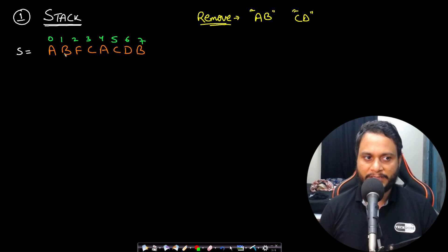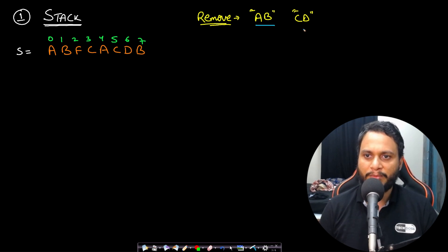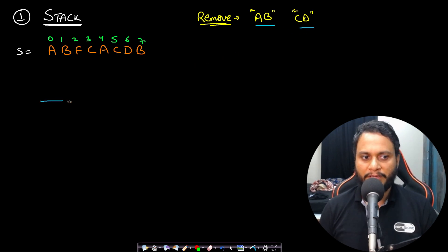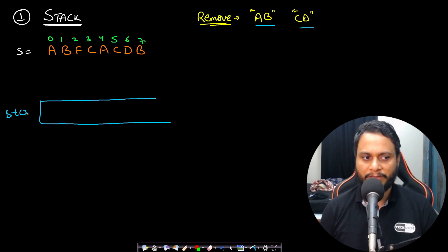Let's see a dry run with the string A, B, F, C, A, C, D, B and understand how we can recursively remove AB and CD using a stack. If we take a stack — let's name it ST — initially it will be empty. Now when I see an item and the stack is empty, I can just push it as it is.